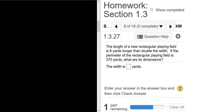The length of a new rectangular playing field is 8 yards longer than double the width. If the perimeter of the field is 370 yards, we want to know what the dimensions are. So by dimensions, we mean width and length.